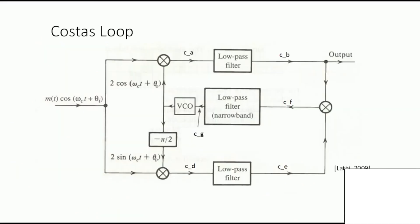So our output is directly proportional to the message signal, which is what we desire. The gain does not distort the signal, and at the output we have the signal successfully demodulated at the receiver. The second method used to demodulate DSB-SC signals was proposed by Costas and is called the Costas loop.